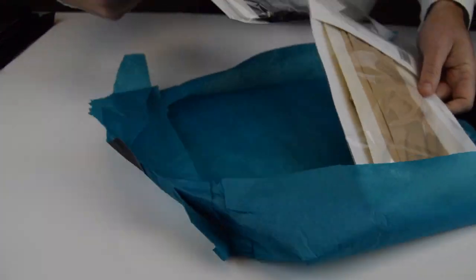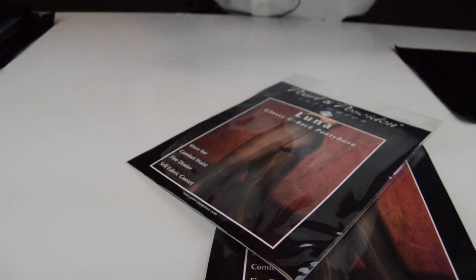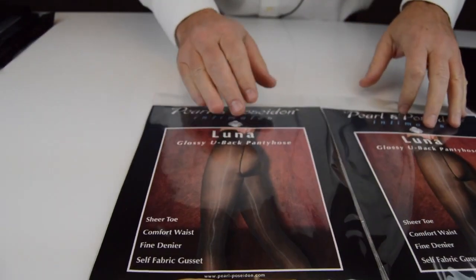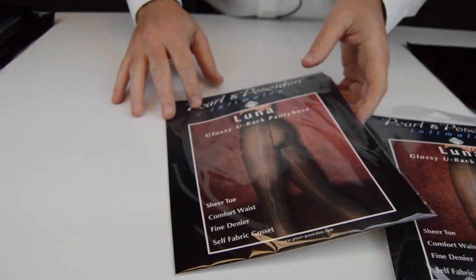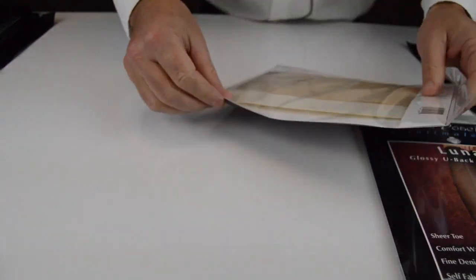Oh my God, what is it? I don't know, but it is in black and it is nude and it is elegantly packaged. Today we are looking at Luna Glossy U-back pantyhose, sheer toe, comfort waist, fine denier, self-fabric gusset.